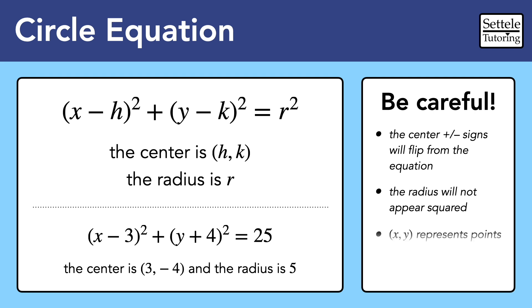Finally, like any equation, the x and y represent points. But for circles, only points on the outside edge of the circle will work in the equation. Basically, the equation is giving us all of the points along the circumference of the circle.